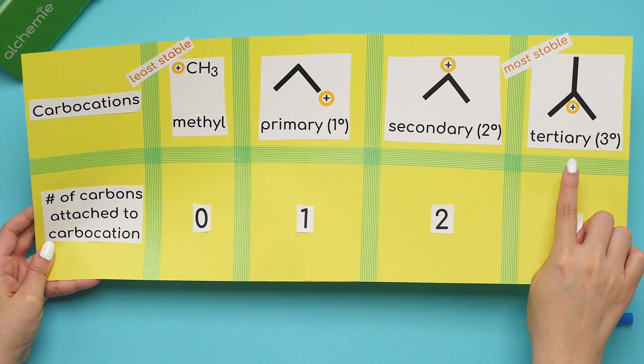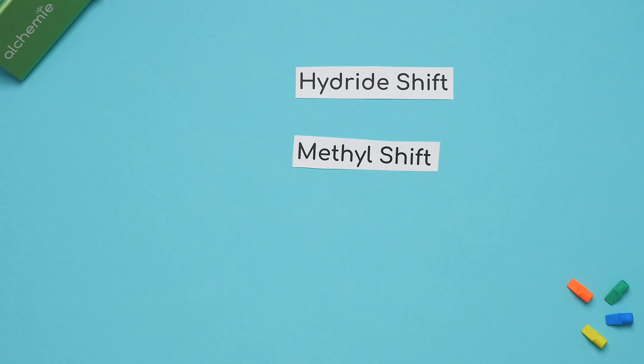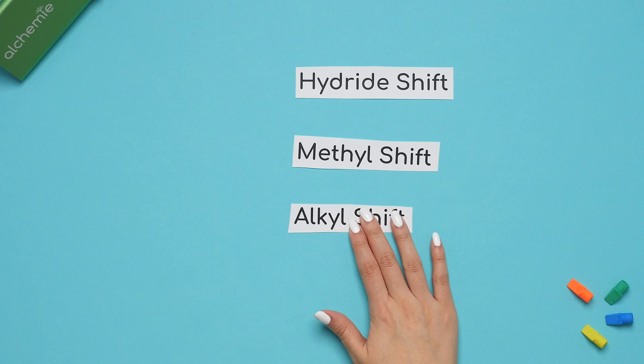To get the most stable carbocation, sometimes we have to rearrange our structure. The two types of rearrangements we'll see is a hydride shift or a methyl shift. A methyl shift can also be referred to as an alkyl shift.